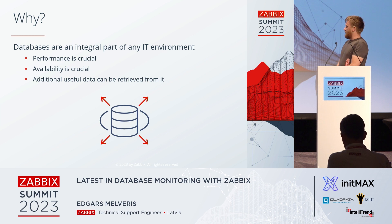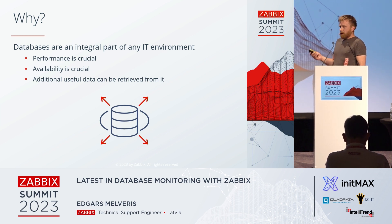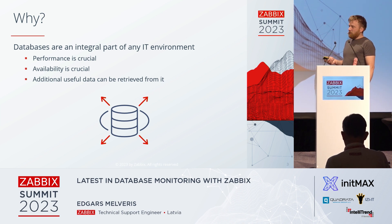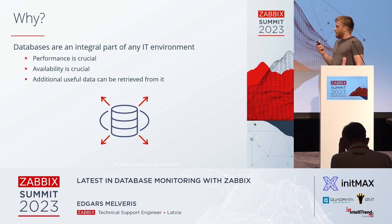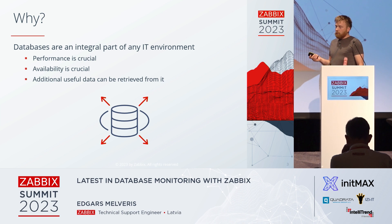I guess most of you understand how crucial databases are in any IT environment. Not just Zabbix uses a database — Zabbix will stop working if the DB is down. But often you will have even more important databases, and if they are down or perform badly, you might be losing lots of money, so you want to know early if performance is decreasing. You want to know immediately if it's down. Plus, if the DB is handling some types of business processes, it might also have useful information about those processes, and you could monitor those too.